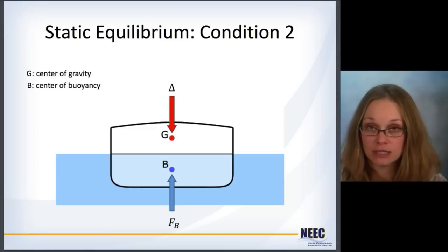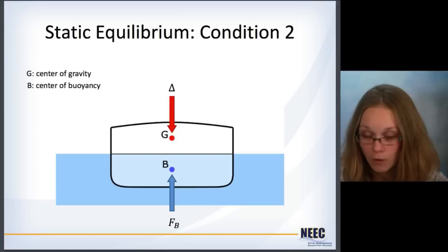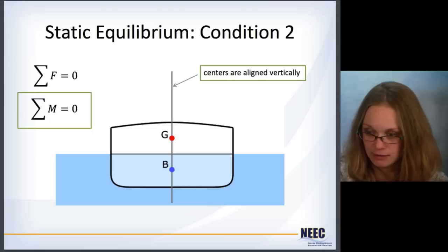To look at condition two, now we need a little bit more information. The weight of the ship acts through the center of gravity denoted here G. The center of buoyancy is the center point where all of the buoyant force is considered to act. So that's B here. If G and B are aligned vertically, it means that there are no moments and the ship, that second condition is met, the ship is in static equilibrium.